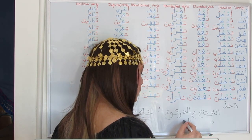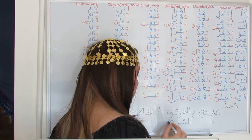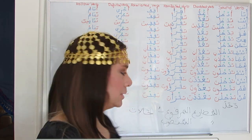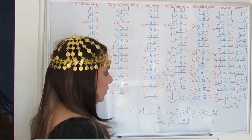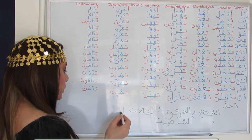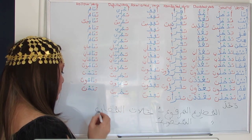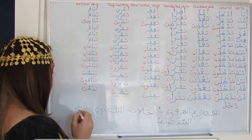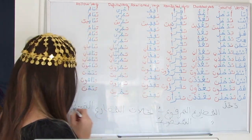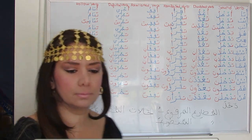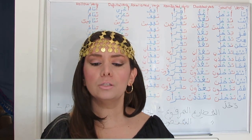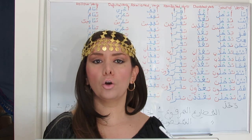Al-Mudari' Al-Mansoob, the subjunctive mood, usually ends in a Fathah. And the jussive mood, Al-Mudari' Al-Majzoum, has a Sukun at the end. The indicative Al-Mudari' Al-Marfoo' is the default grammatical ending of the present tense.